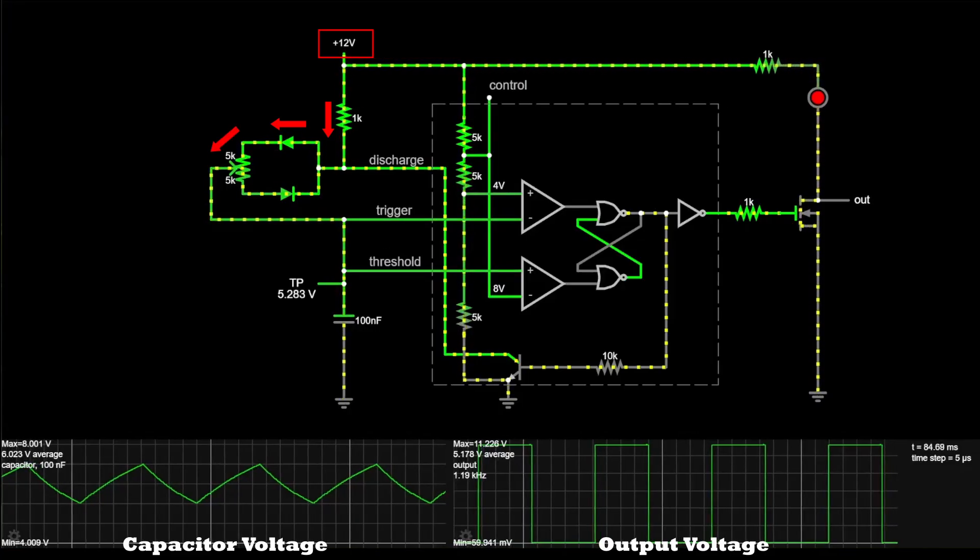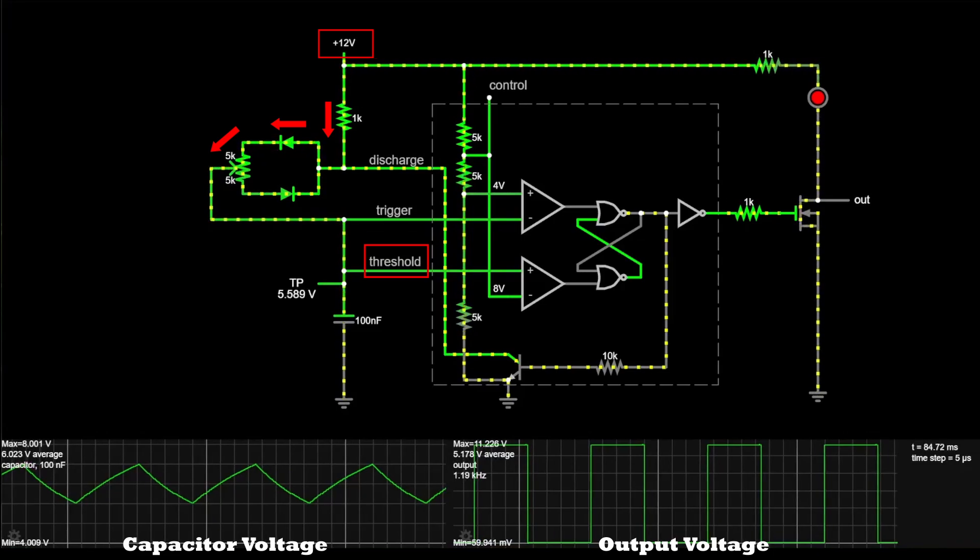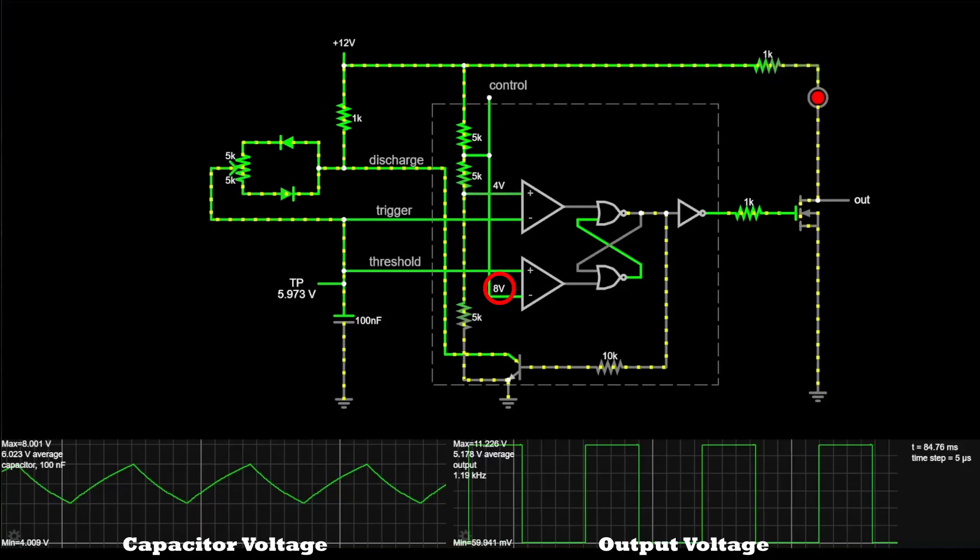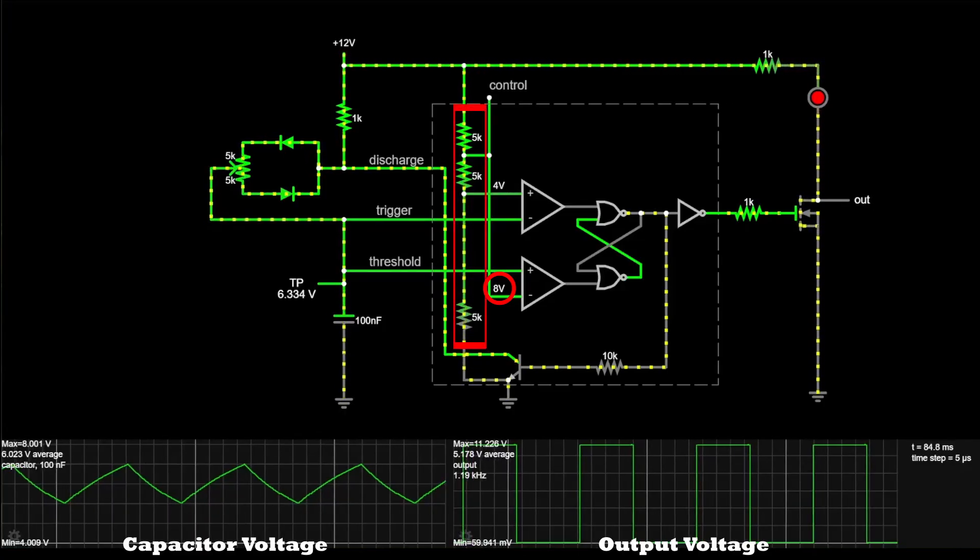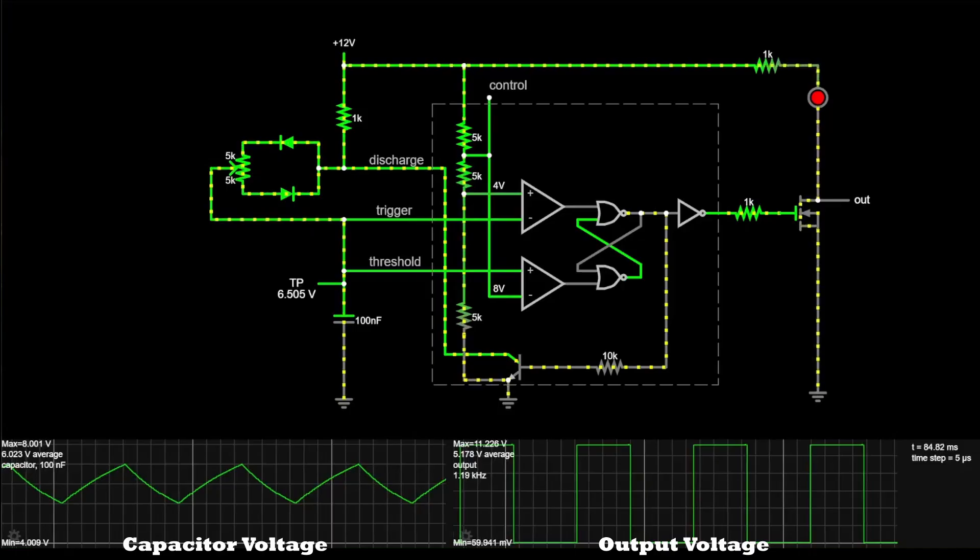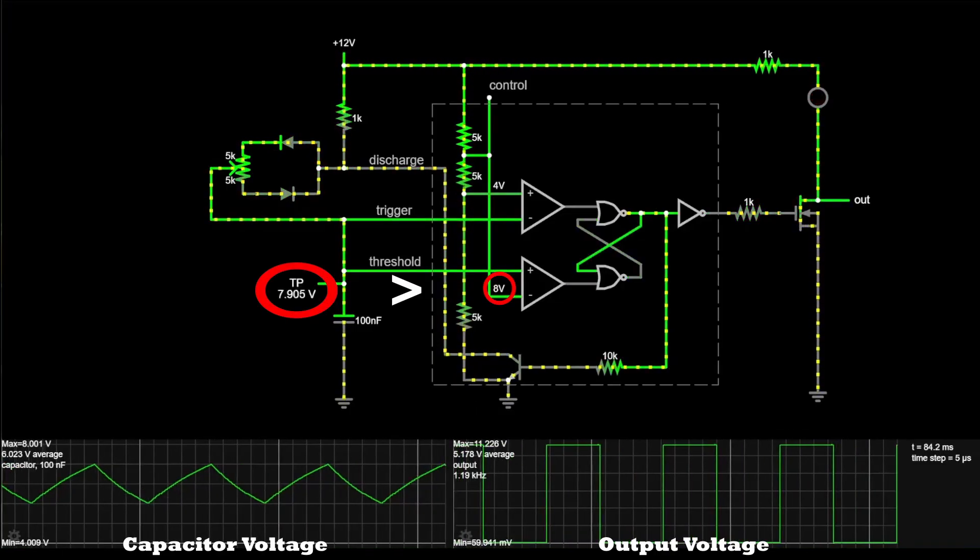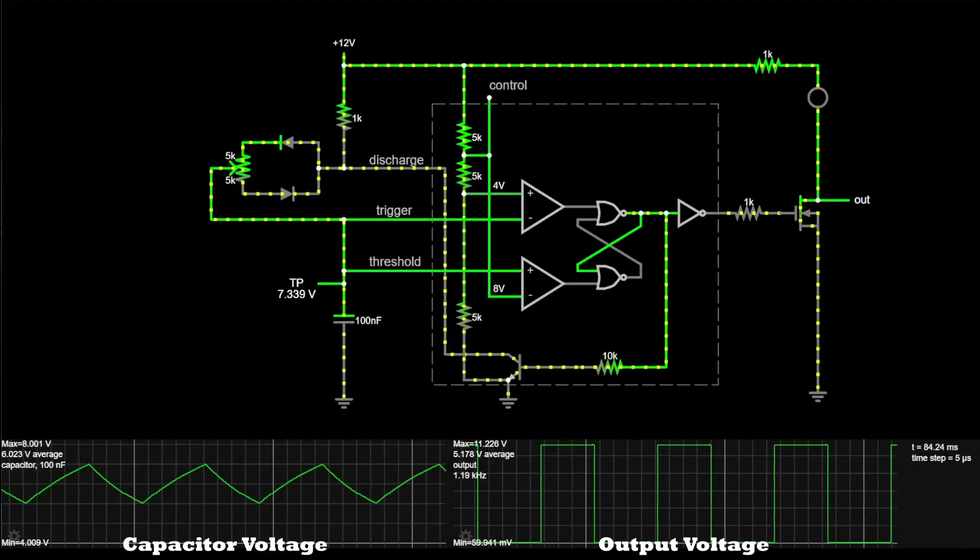The capacitor will continue to charge until the voltage reaches the threshold value of the comparator within the 555 timer IC. The trip point is set at 8 volts, which has been set by the internal resistor divider to be two-thirds of the 12V supply. Once the capacitor charge has passed 8 volts, the comparator outputs are high, the flip-flop state is toggled, and the output turns off.